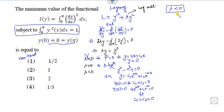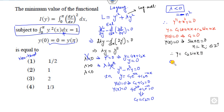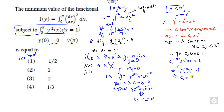So lambda must be less than 0. Take lambda = -n². Then y-double-dash + n²y = 0, giving y = C1·cos(nx) + C2·sin(nx). When y(0) = 0, C1 = 0. When y(π) = 0, for a non-trivial solution sin(nπ) = 0, meaning n = k, a positive integer. Therefore y = C2·sin(kx). Substituting into the constraint, C2² times the integral from 0 to π of sin²(kx) equals 1, which gives pi/2. So C2 = √(2/π).